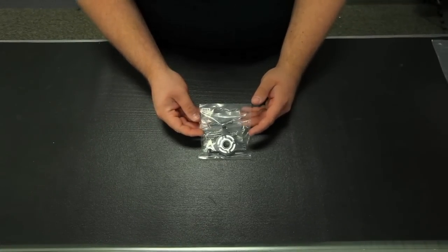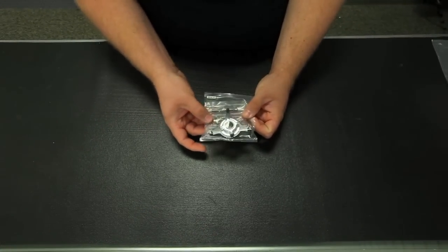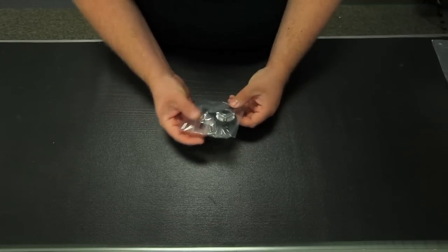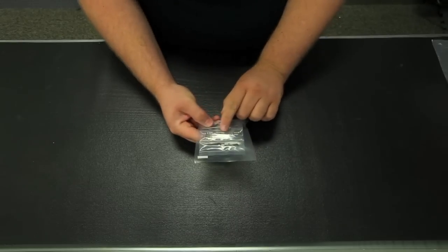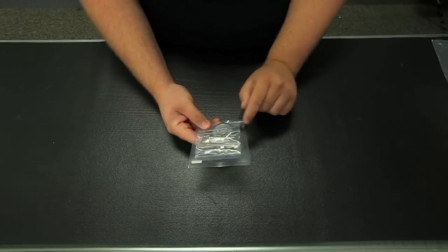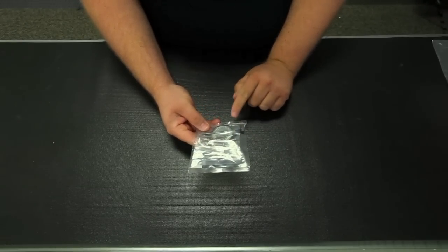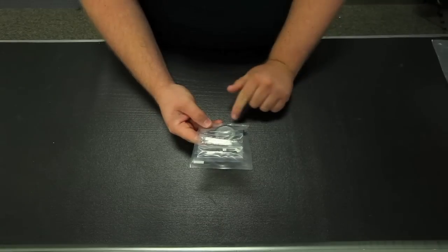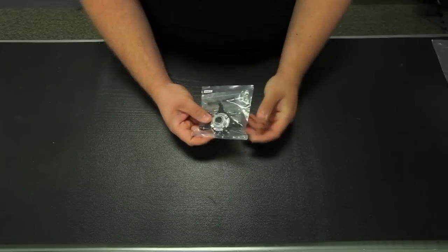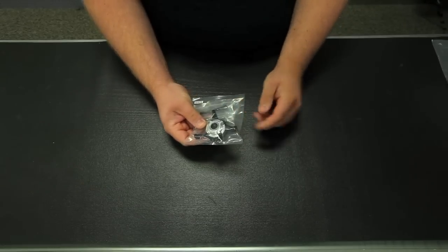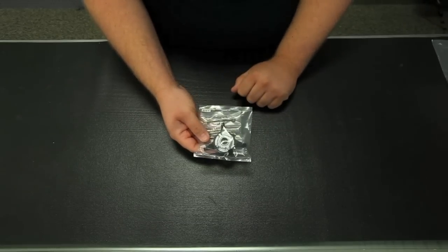Okay, we've got bag four here. This contains the swash plate assembly and all the balls that go into the swash plate. As you can see right here, this hardware bag includes the balls set up for 120 degree CCPM, as well as 140 degree CCPM. It's worth noting all the components required to convert the helicopter between 120 and 140 are included in this kit.